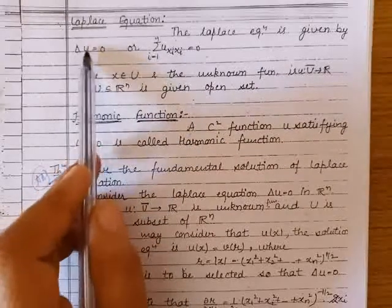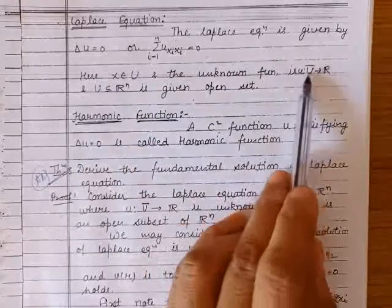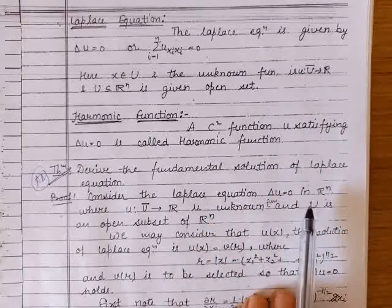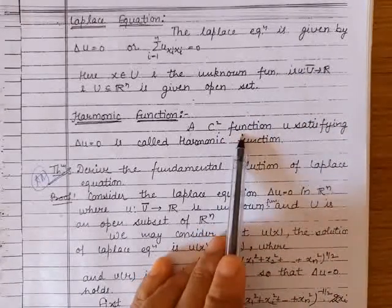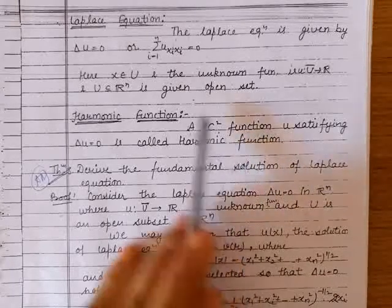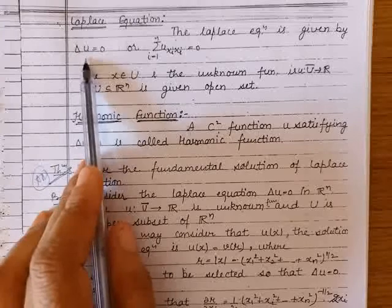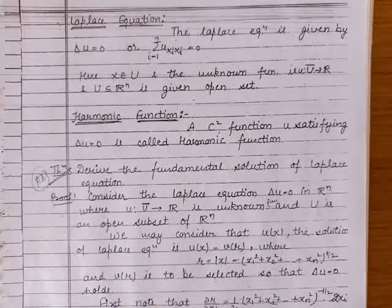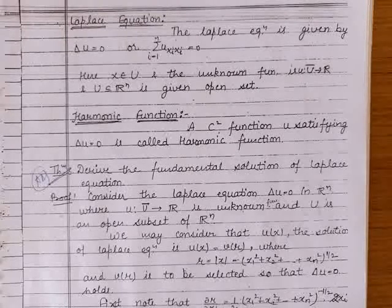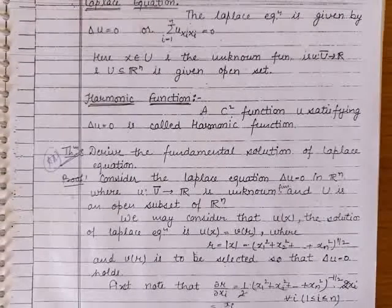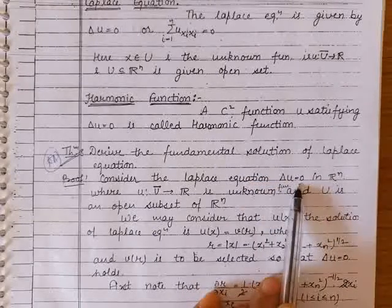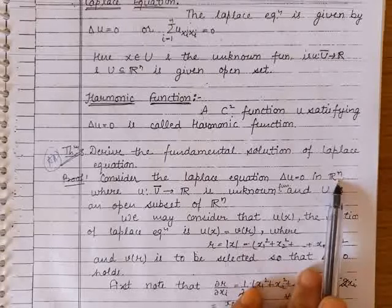The function u is a real-valued function defined on the closure of U. It is an unknown function and a twice continuously differentiable function that satisfies the Laplace equation — that function is called a harmonic function. Now we will find the fundamental solution of Laplace equation. To do so, let us take Δu = 0 in n-dimensional Euclidean space ℝⁿ.